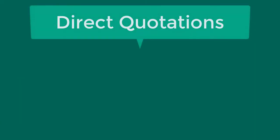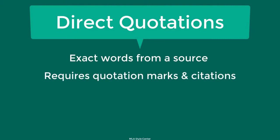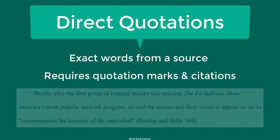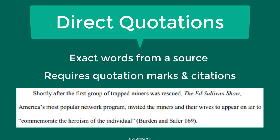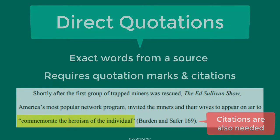Direct quotations involve incorporating another person's exact words into your own writing. Using a source's exact words requires a pair of quotation marks around the direct quote to signal that these words are not your own.